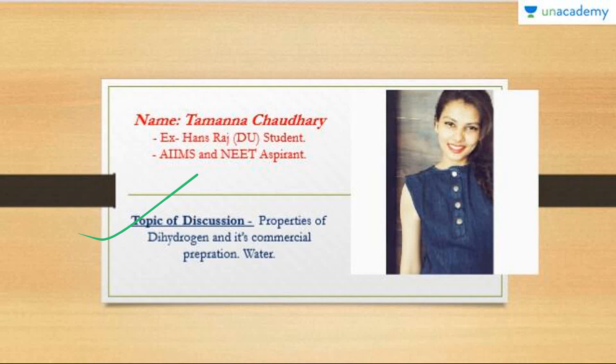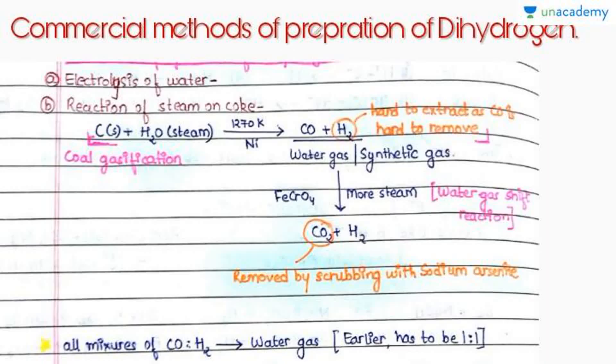This entire video is based on the topics like properties of dihydrogen and its commercial preparation, and once we have dealt with it, we'll move on to water. The first method to commercially prepare dihydrogen is electrolysis of water. When we electrolyze water, we get two products: hydrogen gas and oxygen gas at cathode and anode respectively.